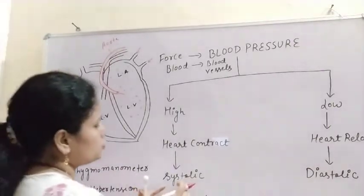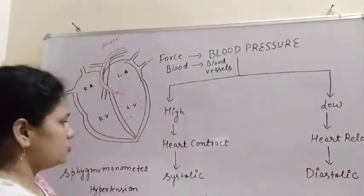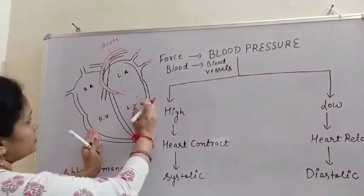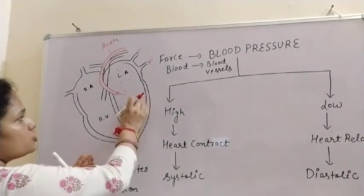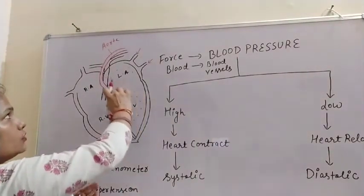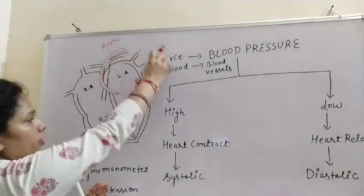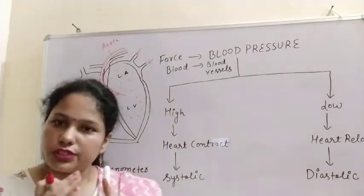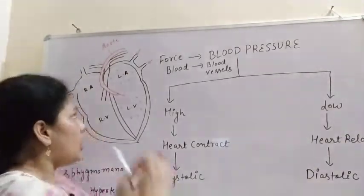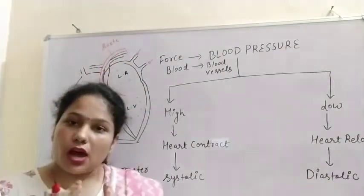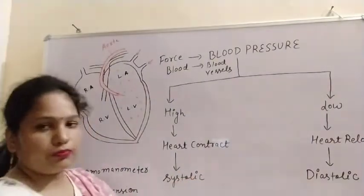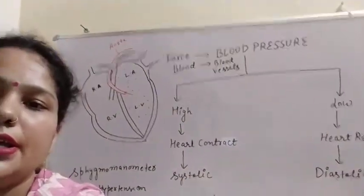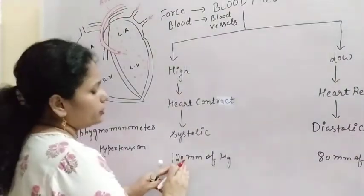So now let us understand what is systolic and what is diastolic pressure. Systolic means when our heart contracts — when the ventricles of our heart contract, they exert a pressure on the arteries. And that pressure exerted on the arteries is known as systolic pressure. And the value of this systolic pressure is 120 mmHg.